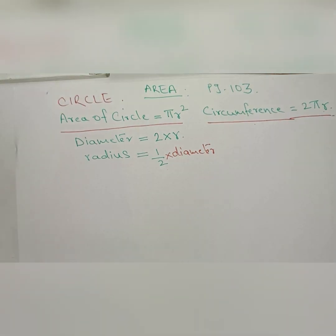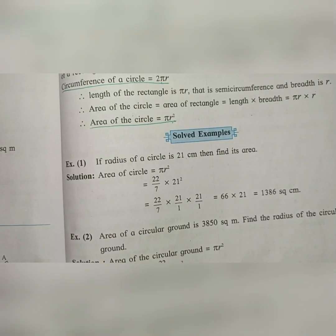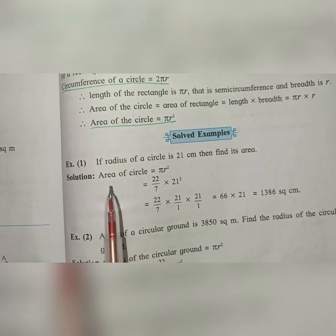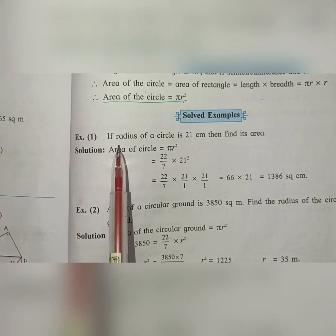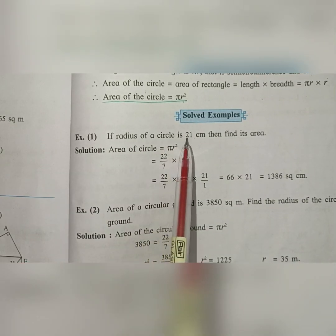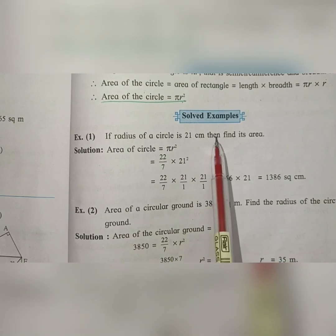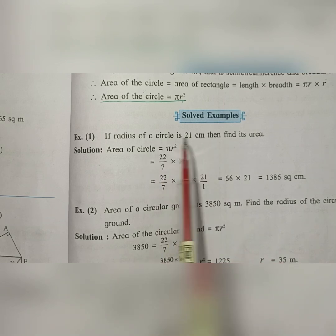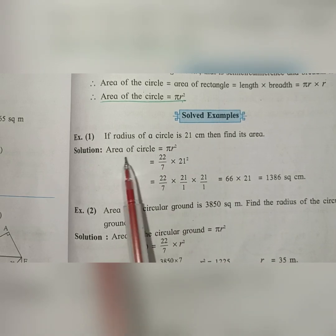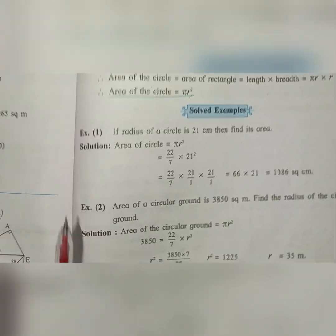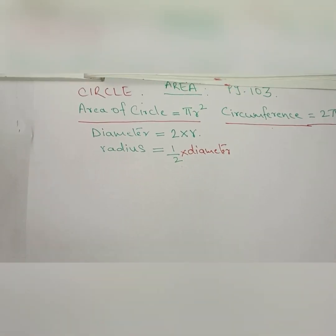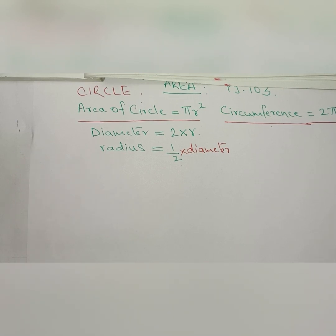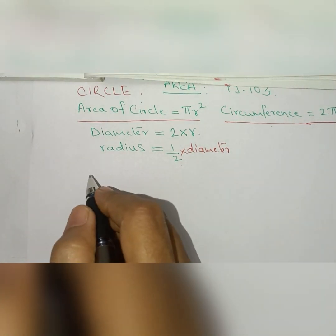First solved example, page number 103: if the radius of a circle is 21 cm, then find its area. It is a simple sum — the radius is given and we have to find the area of the circle. Easy questions are given at the start so that you get familiar with the formulas and get practice.